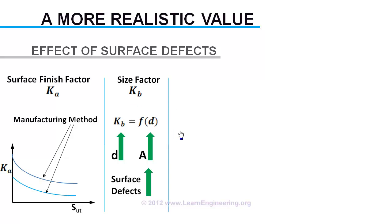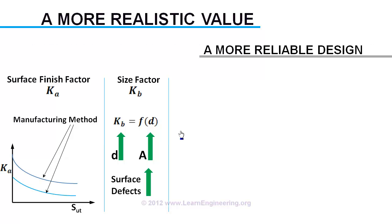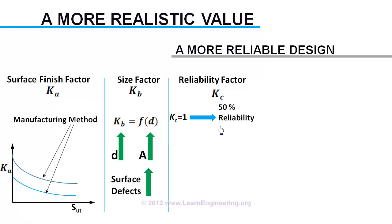Next, a factor to improve reliability of design for fatigue, KC. Fatigue test has got only 50% reliability. So if we decrease endurance limit further, we can say with more reliability that material will not fail. This factor is used for that purpose, for a specified reliability. If we choose KC as 1, then resulting endurance strength has got only 50% reliability.